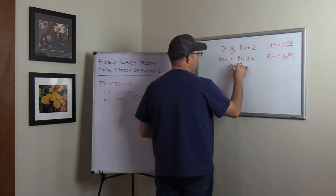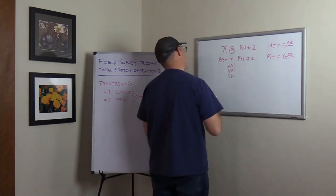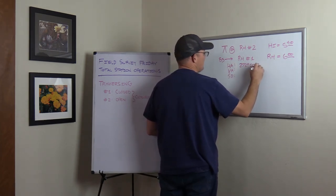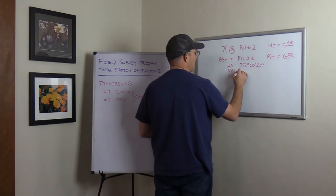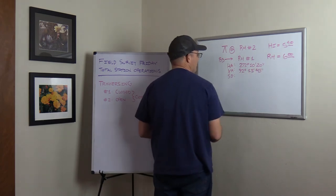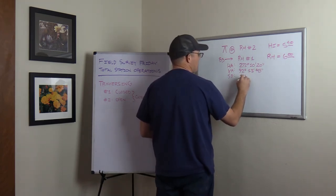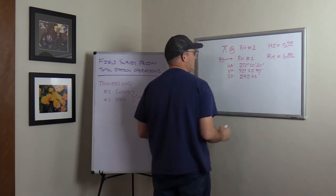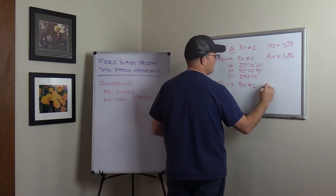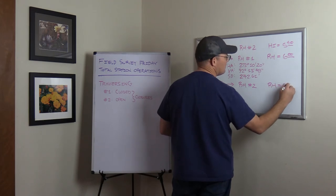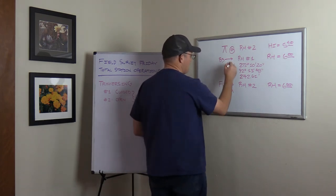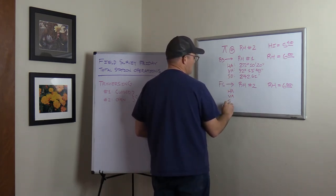In our example we were turning angles to the right. Let's say our horizontal angle here is 272 degrees, 10, 20. Vertical angle, let's say it would be 92, 13, 48. And our slope distance — let's say it was 242.61 feet. Then you do your foresight. So your foresight is RH number three, rod height equals six feet. For every leg of the traverse, you're going to put your horizontal angle, your vertical angle, and your slope distance.